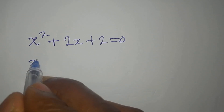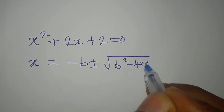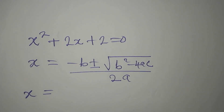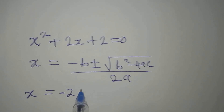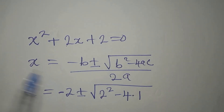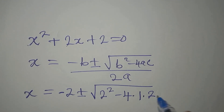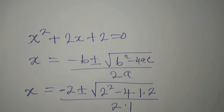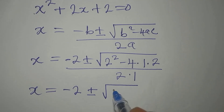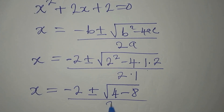The formula is x equals minus b plus or minus the square root of b squared minus 4ac, all over 2a. So our x is minus b, which is minus 2, plus or minus the square root of b squared — that is 2 squared — minus 4 times a, which is 1, times c, which is 2. Then we divide by 2 times 1. Going ahead: x is minus 2 plus or minus the square root of 4 minus 8, all over 2.